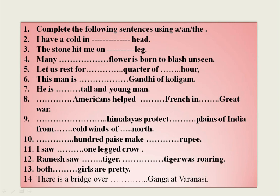'He is a tall and young man' — referring to the person for the first time, so use the indefinite article. 'The Americans helped the French in the great war' — 'Americans' refers to the entire nationals of a country, so use 'THE'; 'French' refers to the nation; 'great war' is the name of a specific war. 'The Himalayas protect the plains of India from the cold winds of the north' — Himalayas is a mountain range; 'plains of India' needs 'THE'; 'north' is a direction preceded by 'of,' so use 'THE.'